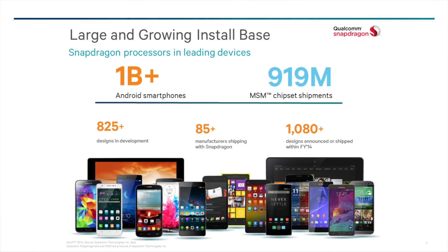Let's first start with Snapdragon. Qualcomm Snapdragon processors were designed from the ground up specifically for mobile devices. We call these processors SOCs, short for System on a Chip, because they have integrated operational engines and feature sets. Qualcomm Technologies is able to take advantage of this integrated system to optimize for low-power usage required in mobile. Therefore, Snapdragon provides the power for great user experience, but in an efficient manner to avoid excessive battery drain.